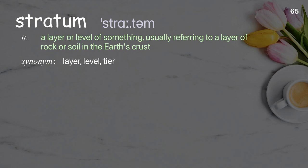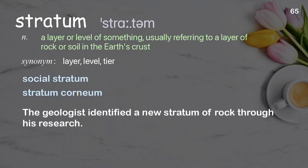Stratum: a layer or level of something, usually referring to a layer of rock or soil in the Earth's crust. Examples: social stratum, stratum corneum. The geologist identified a new stratum of rock through his research.